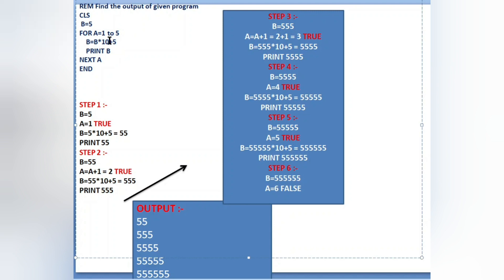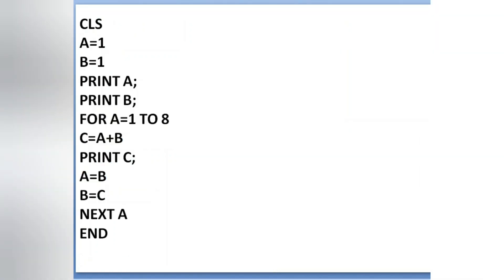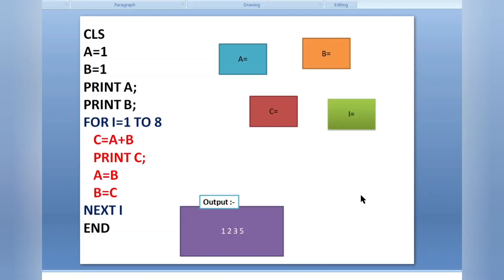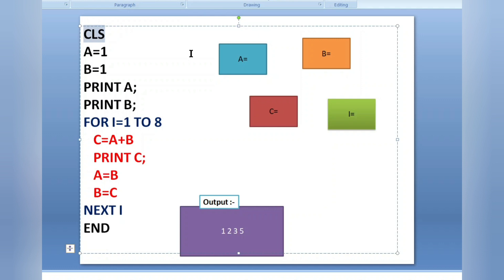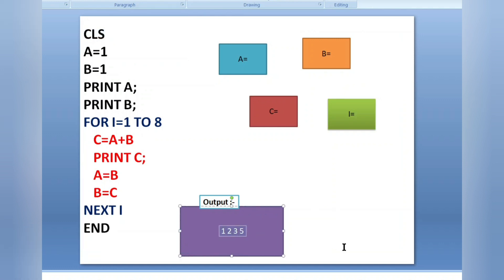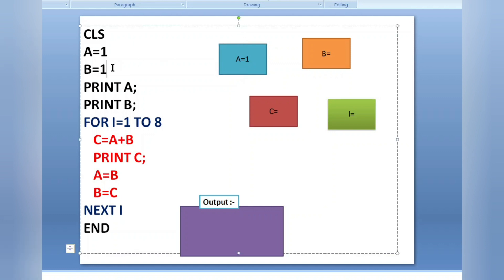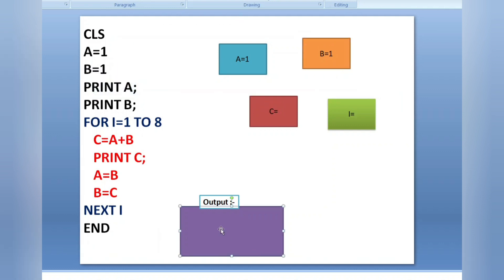I will explain the dry run of the program line by line properly. First, CLS is written — CLS is used to clear the data of the output screen. Next, a equals one — I am keeping the variable value as one. And b equals one — I am keeping the value of b also as one. Then print a — the value of a, which is one, will be printed in the output screen.